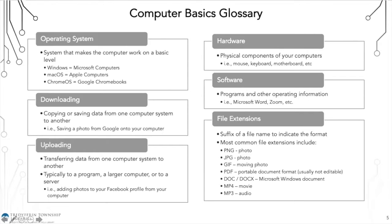I also wanted to go over file extensions. An extension is a suffix — a little acronym that gives you information about the format of a file. The most common include PNG, which is a photo, and JPEG, which is also a photo. PNGs are usually higher quality, whereas JPEGs are compressed and take up less space on your hard drive.